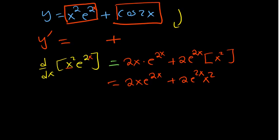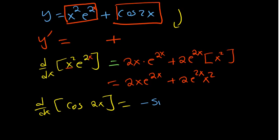Now we also differentiate the cos(2x) part. Since cos(2x) is a trigonometric function with a composite argument, we apply the chain rule. The derivative of cosine is negative sine, so we get negative sine of 2x, maintaining what is attached to it, then multiply by the derivative of the inner part 2x, which is just 2. So the answer becomes negative 2 sine 2x.